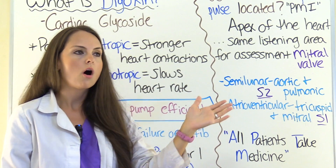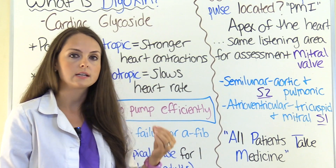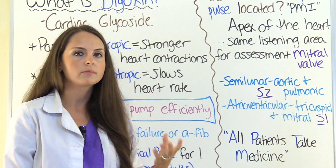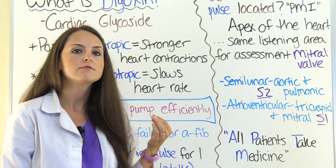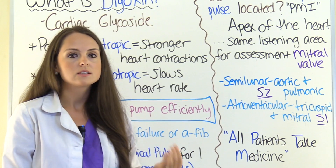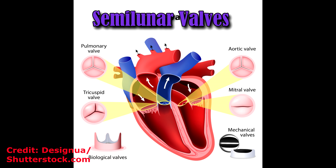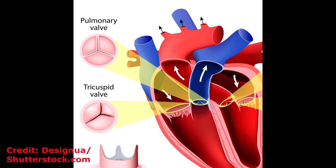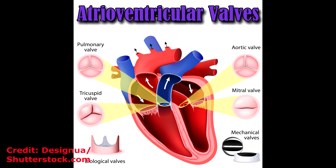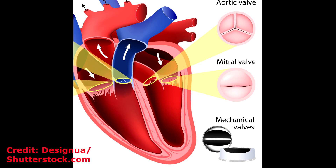Let's talk about all the places that we assess on the chest whenever we're listening to heart sounds, because we're listening to the closure of those four valves — lub-dub, S1 and S2. The first set of valves are called the semi-lunar valves, which includes the aortic valve and the pulmonic valve. When these close, that is S2 — the dub part of lub-dub. Then we listen to the atrioventricular valves, which are the tricuspid and the mitral valve, and when they close you hear S1, which is the lub part.